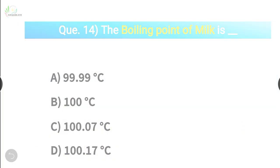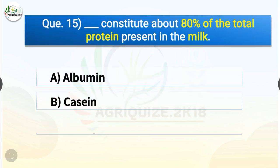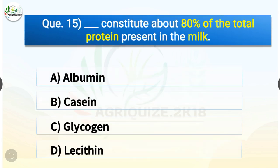Question number 15. Dash constitutes about 80% of the total milk protein present in milk. The options are albumin, casein, glycogen or lecithin. The correct answer is option B, casein. So casein constitutes about 80% of the total protein present in milk.